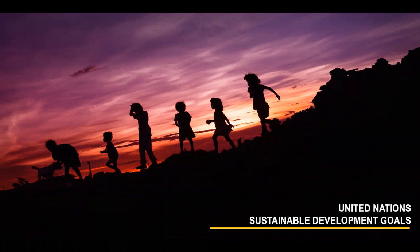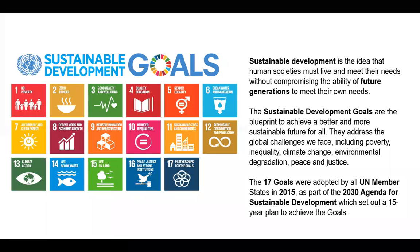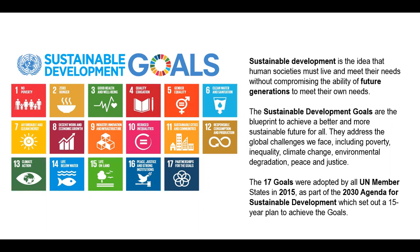But first, what is sustainable development? Sustainable development is the idea that human societies must live and meet their needs without compromising the ability of future generations to meet their own needs. It means we can get our present needs without compromising the needs of the future, so we can avoid causing big problems for future generations. The United Nations has 17 goals for all of its members.